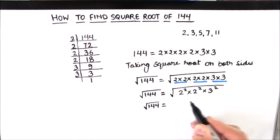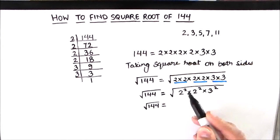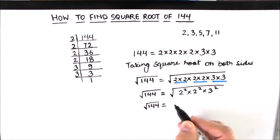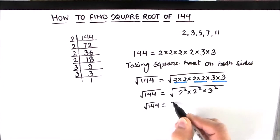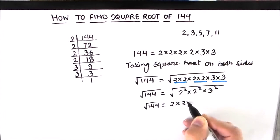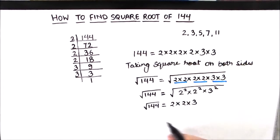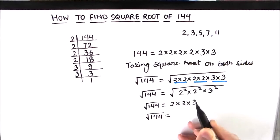Now all these numbers are in the square form, and the square root of a square number will give us the number itself. So all these numbers will come out of the square root sign. So we are left with 2 times 2 times 3. So square root of 144 is equal to 2 times 2 times 3, which is 4 times 3, equals 12.